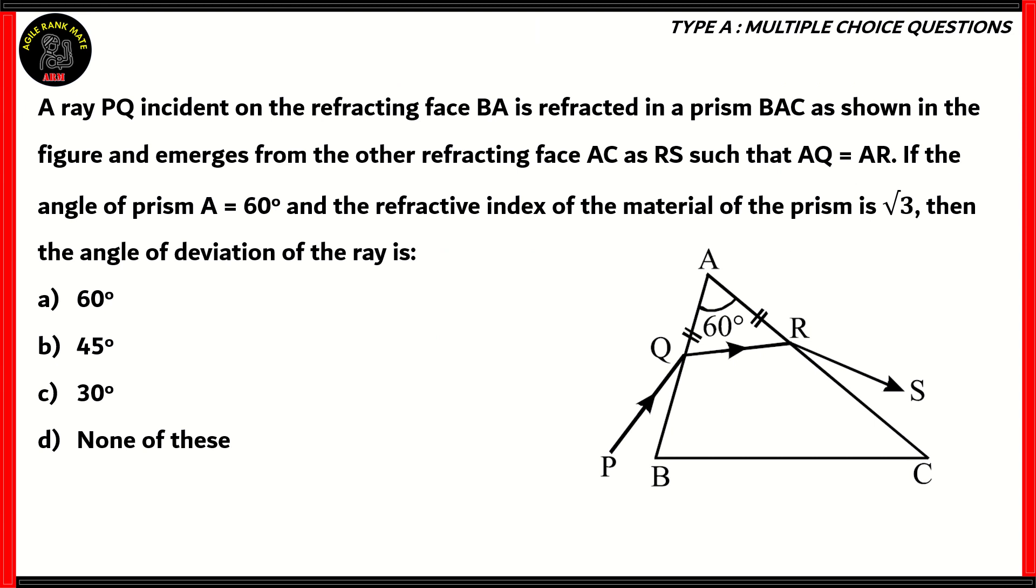A ray PQ is incident on the refracting surface BA, is refracted in a prism BAC, as shown in the figure, and emerges from the other refracting face AC as RS, such that AQ equals AR. If the angle of prism A is 60 degrees and the refractive index of the material is root 3, then find the angle of deviation. Basically, you have a prism and light is refracted through it. What the most important things given here is that AQ equals AR.